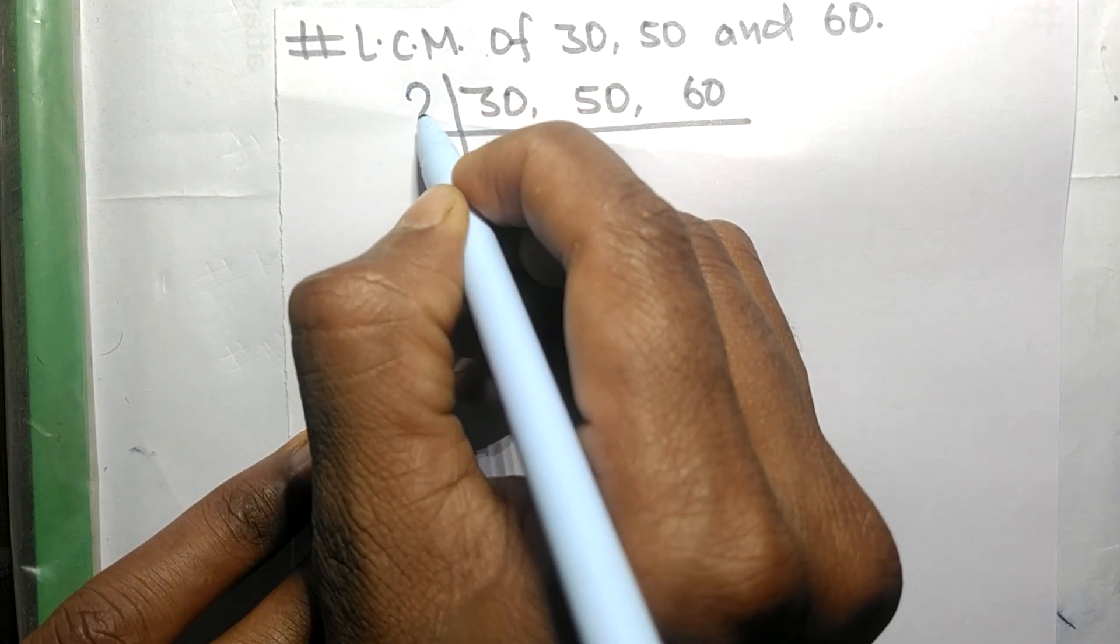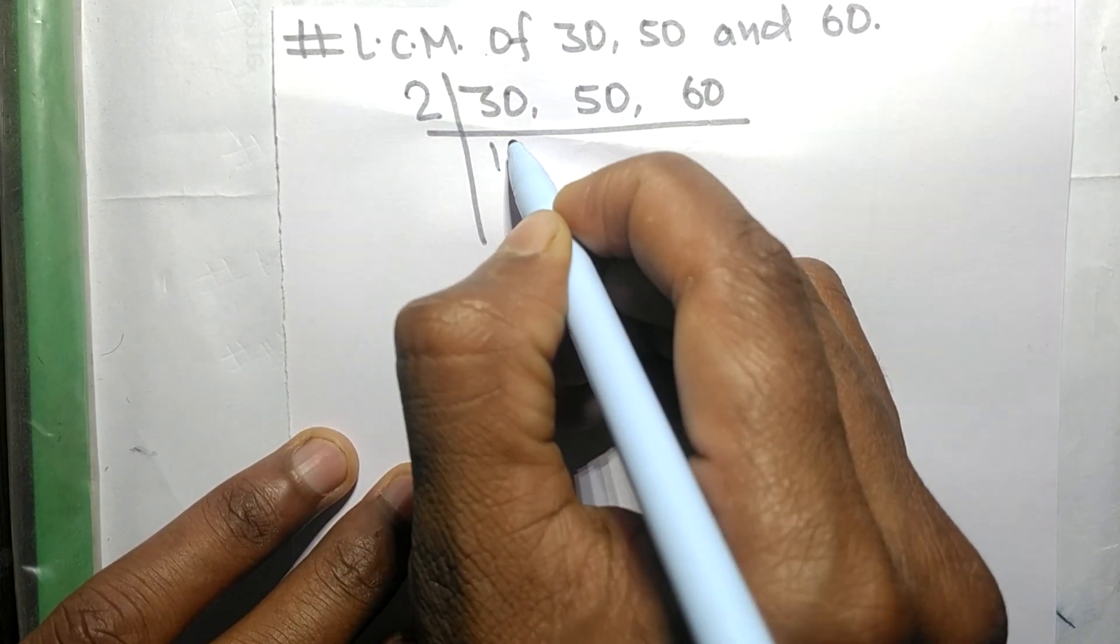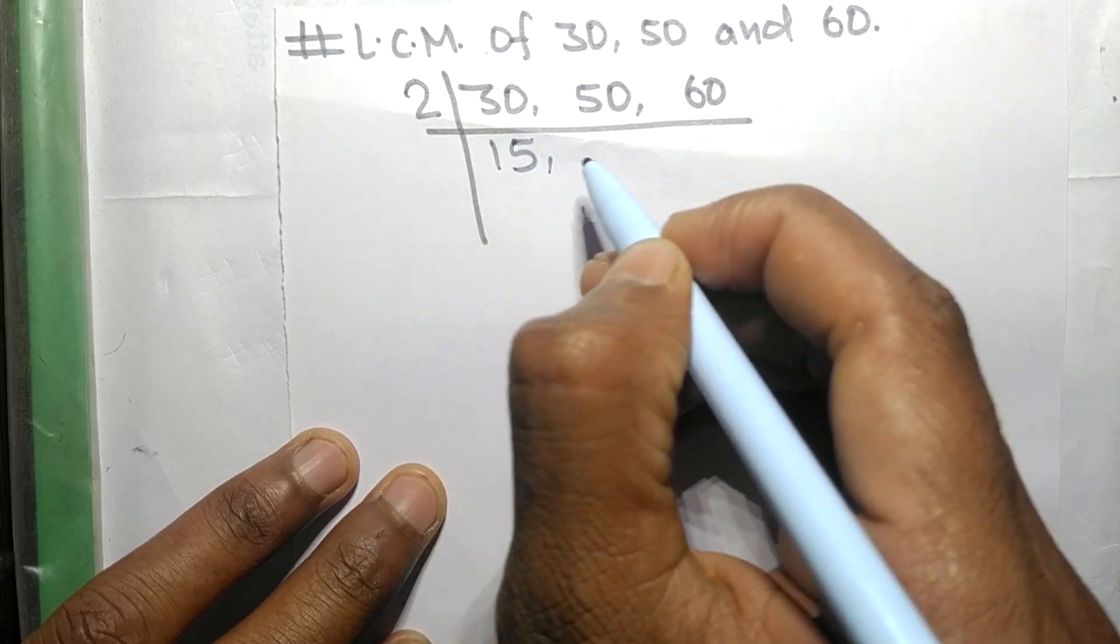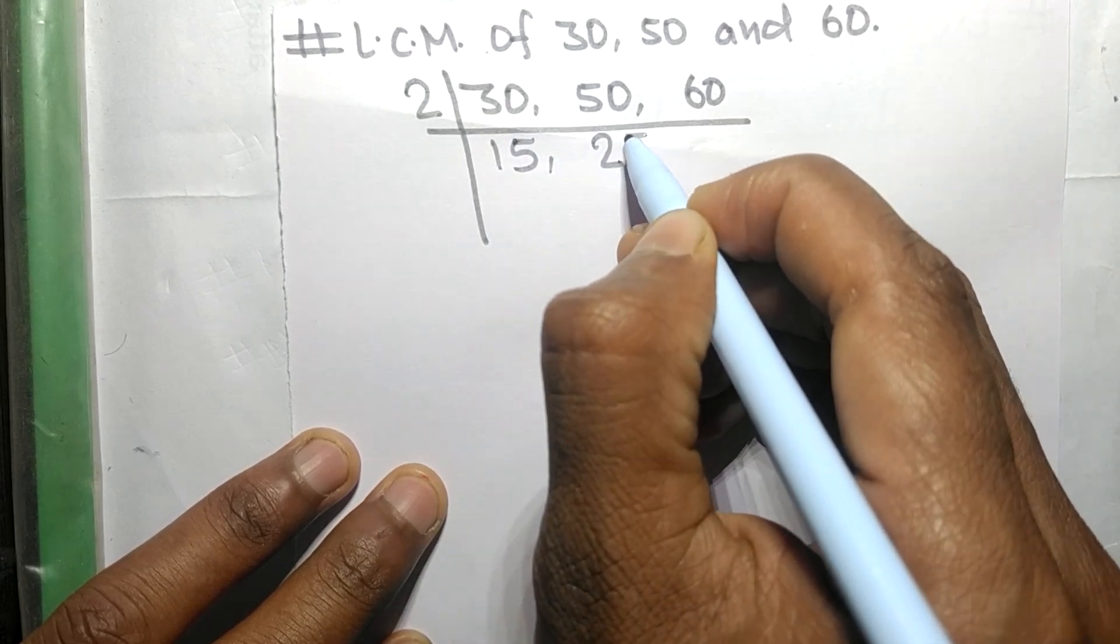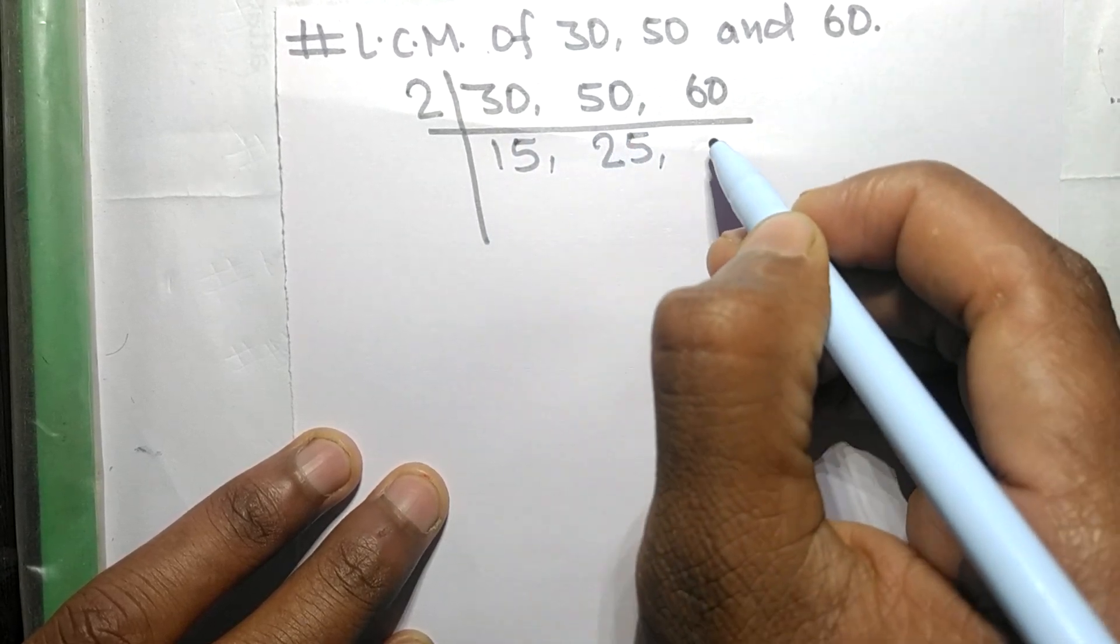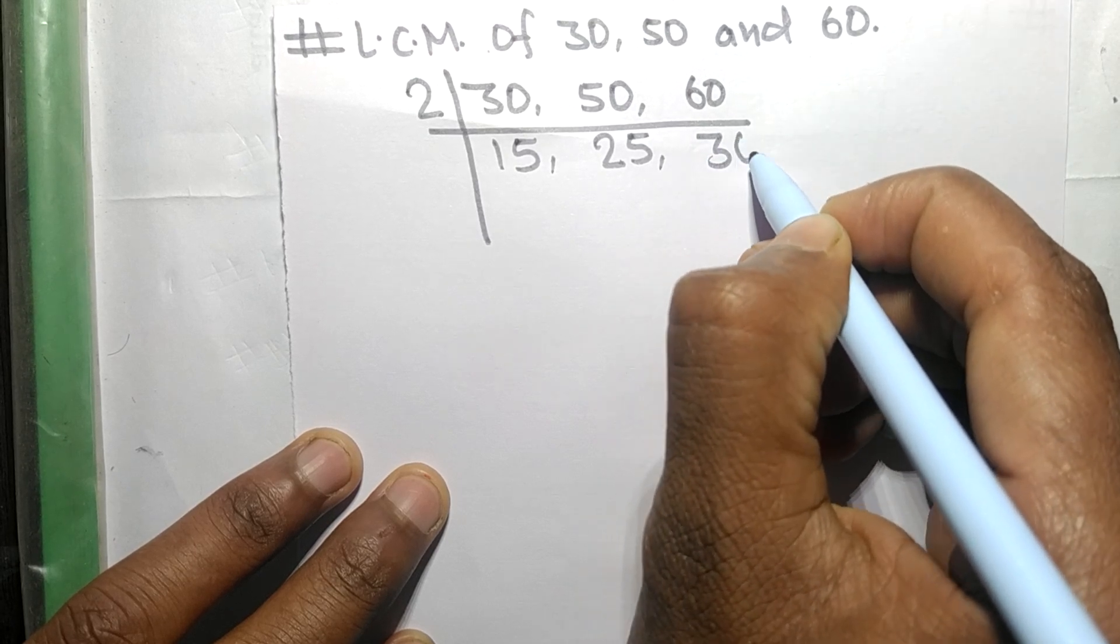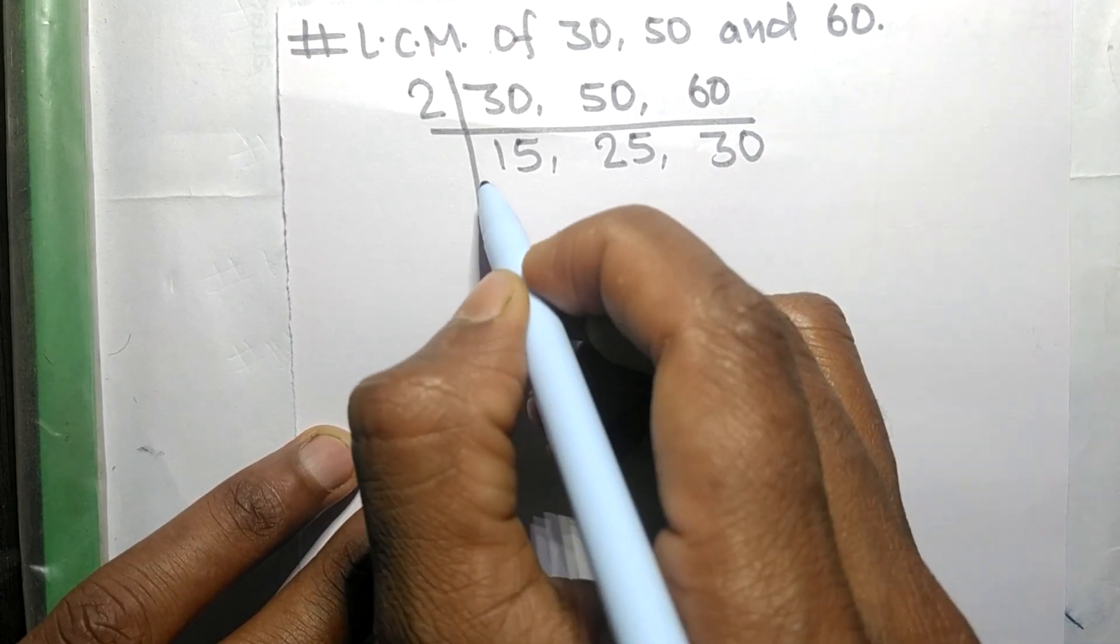So 2 times 15 mean 30, 2 times 25 mean 50, 2 times 30 mean 60.